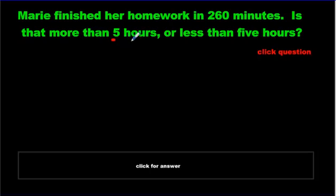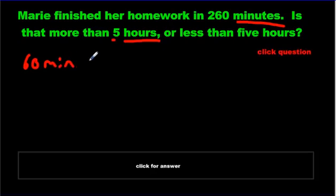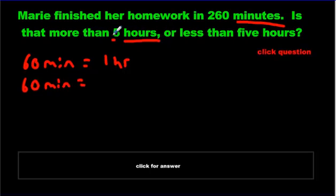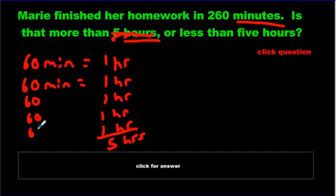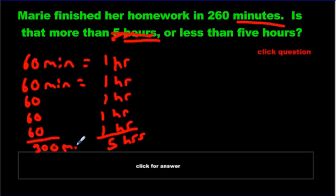We have hours and minutes — what does the song say? 60 minutes in one hour. I'm going to write five 60s — that's five hours — and we know how much that makes. Five 60s makes 300 minutes. So instead of saying five hours, we say 300 minutes. Now, is 260 minutes more than 300 minutes or less? Of course — 260 is less than 300.